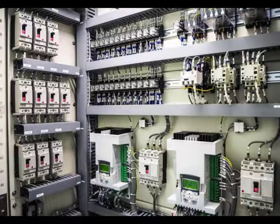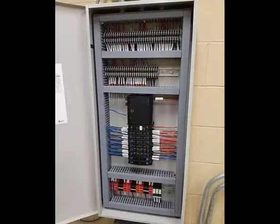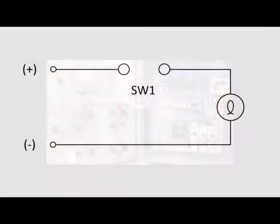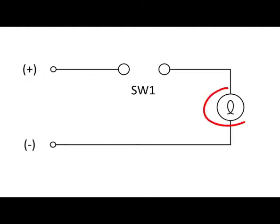If you come from an electrical background, you already have some basic knowledge of programming logic. Let's look at some electrical wiring examples to show you what I mean. Look at this first example. How do we turn the light on? Basically we close the switch, so if switch 1 is closed, then the light will turn on.